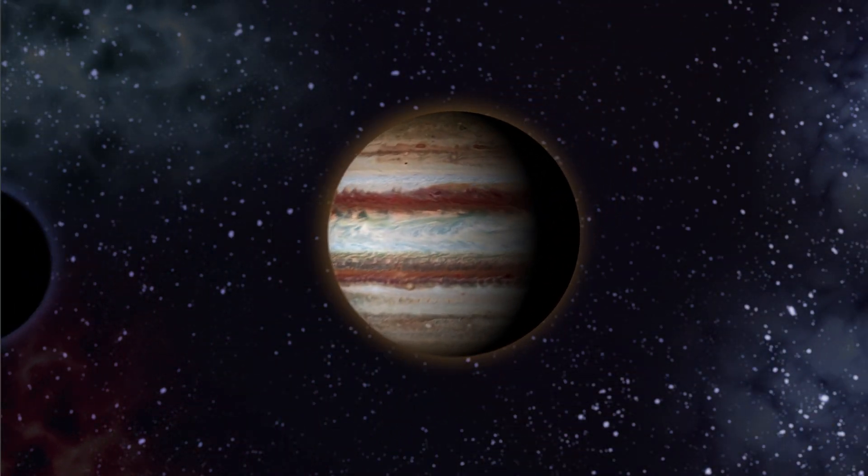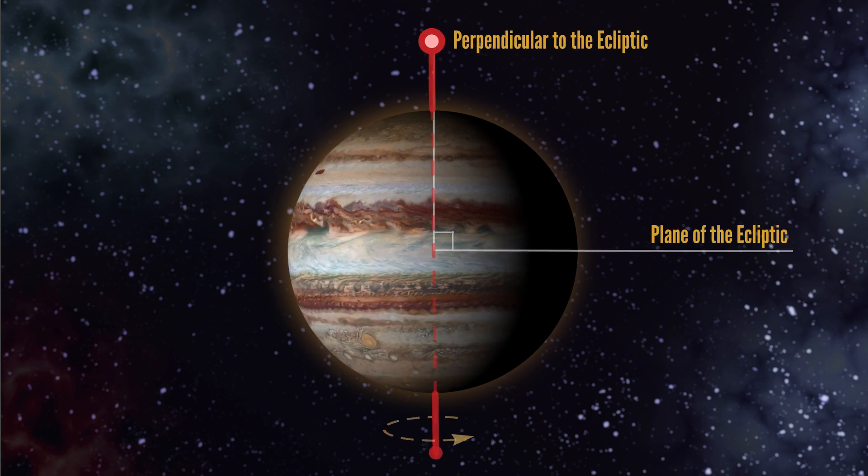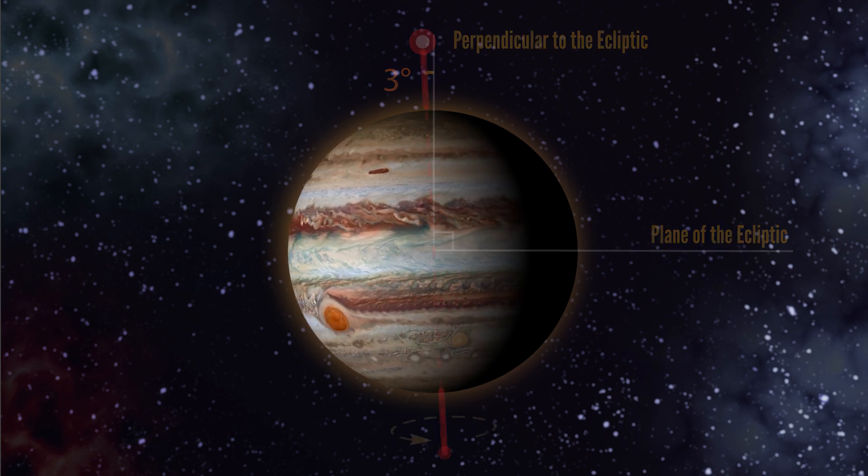Jupiter technically has seasons due to its orbit and slight tilt, but they're basically indiscernible due to all those sweet-looking gas storms, so moving right on.